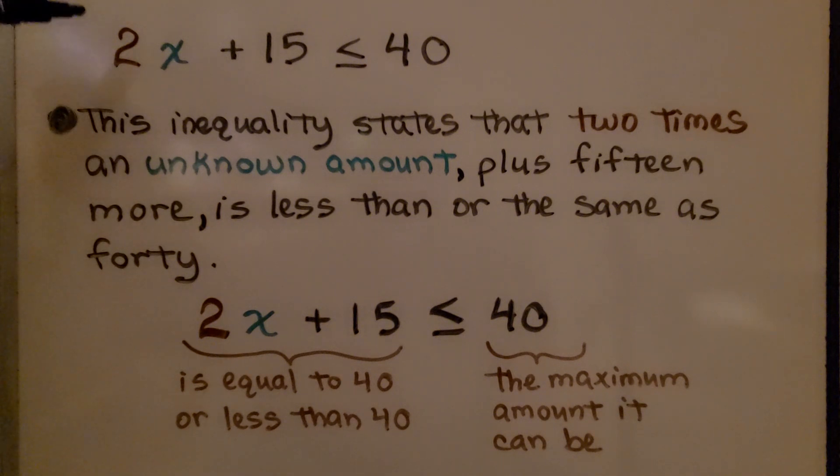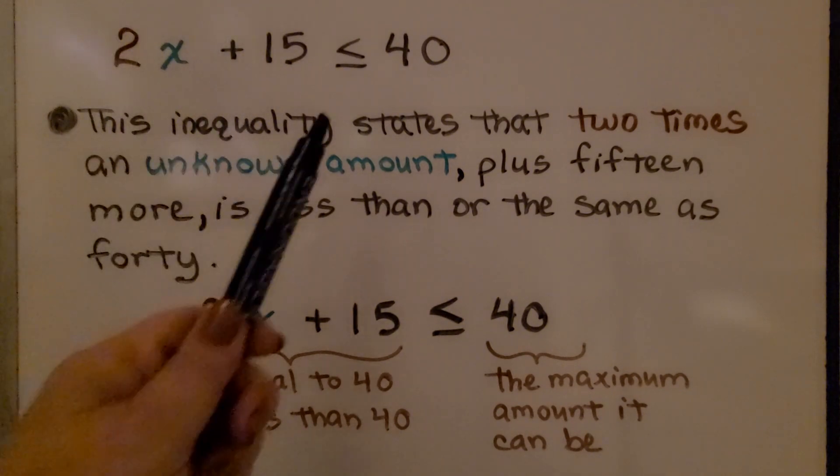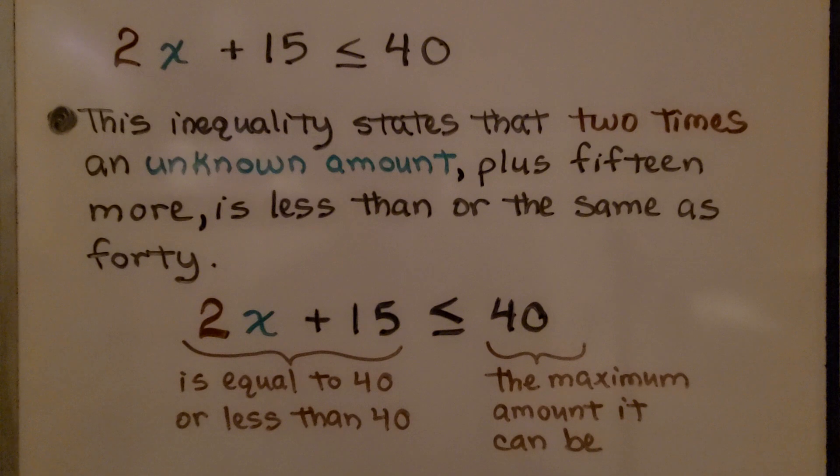Let's take a look at this inequality. This inequality states that 2 times an unknown amount plus 15 more is less than or the same as 40. The left side of this inequality, 2x plus 15, is equal to 40 or less than 40. The right side, that's the maximum amount it could be. It can only go up to 40.